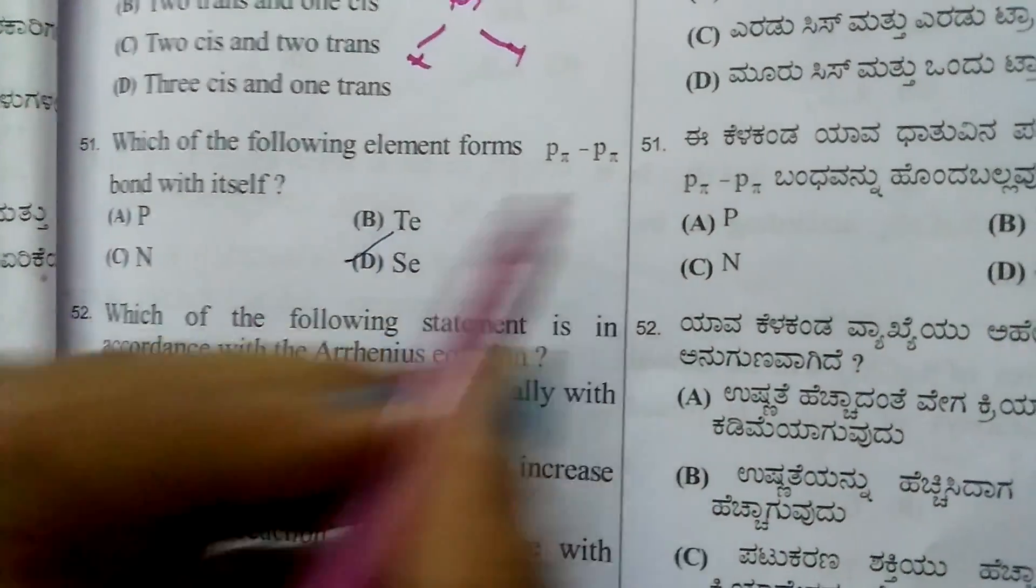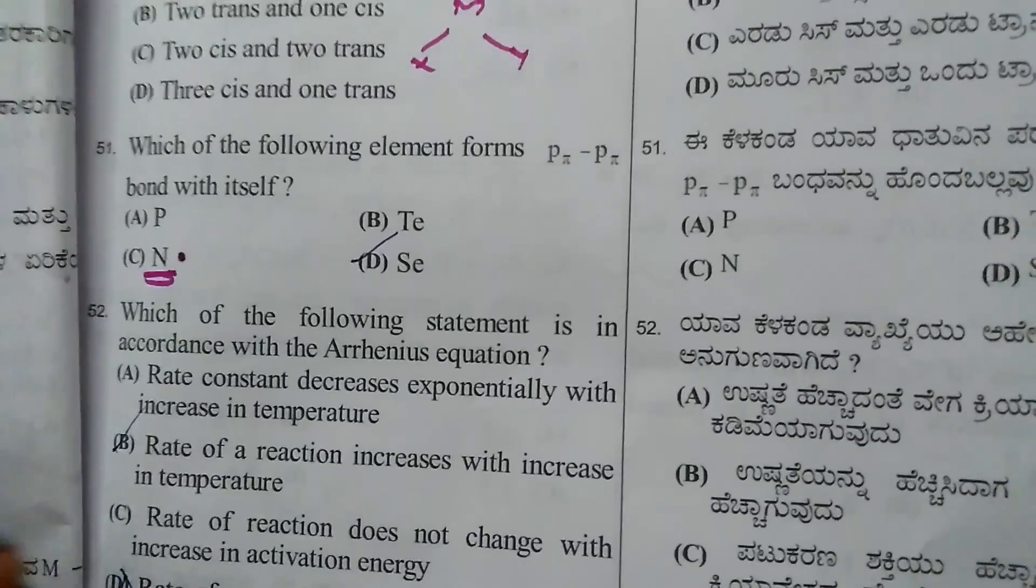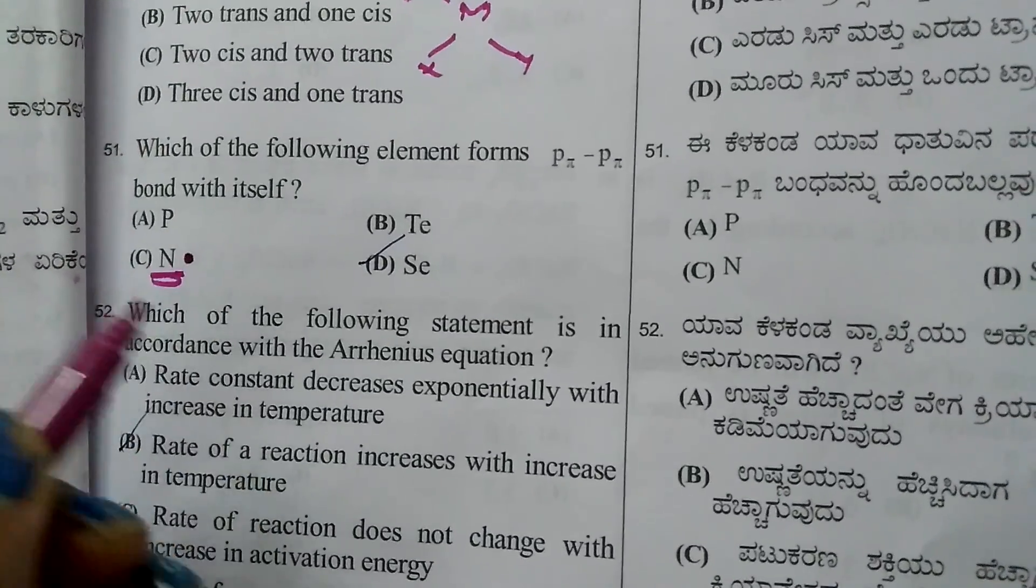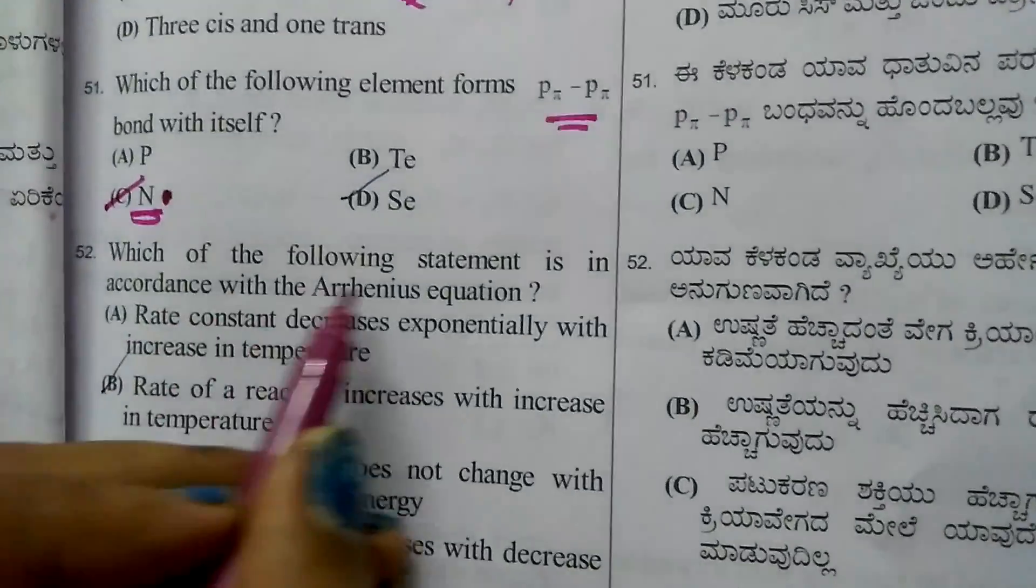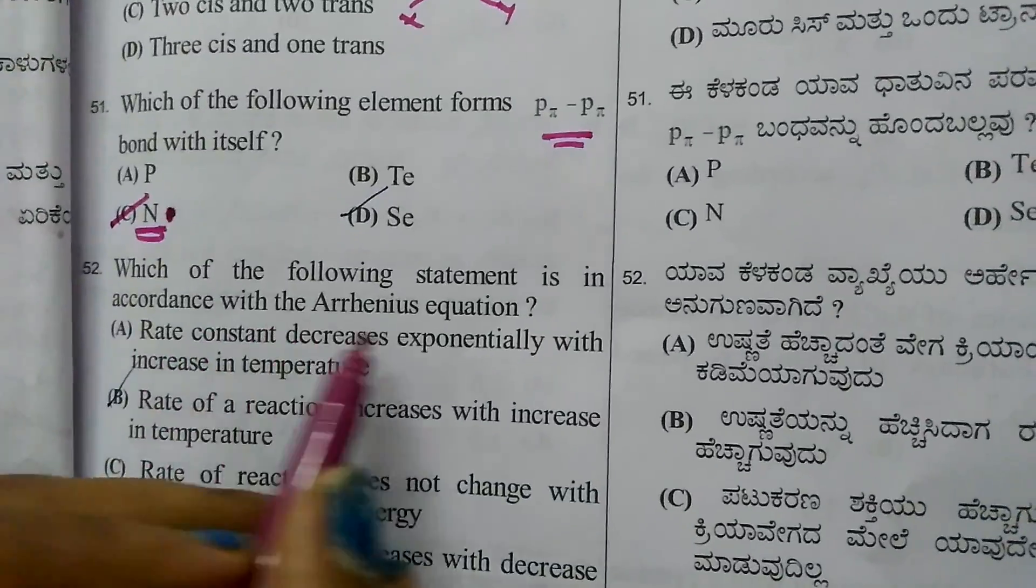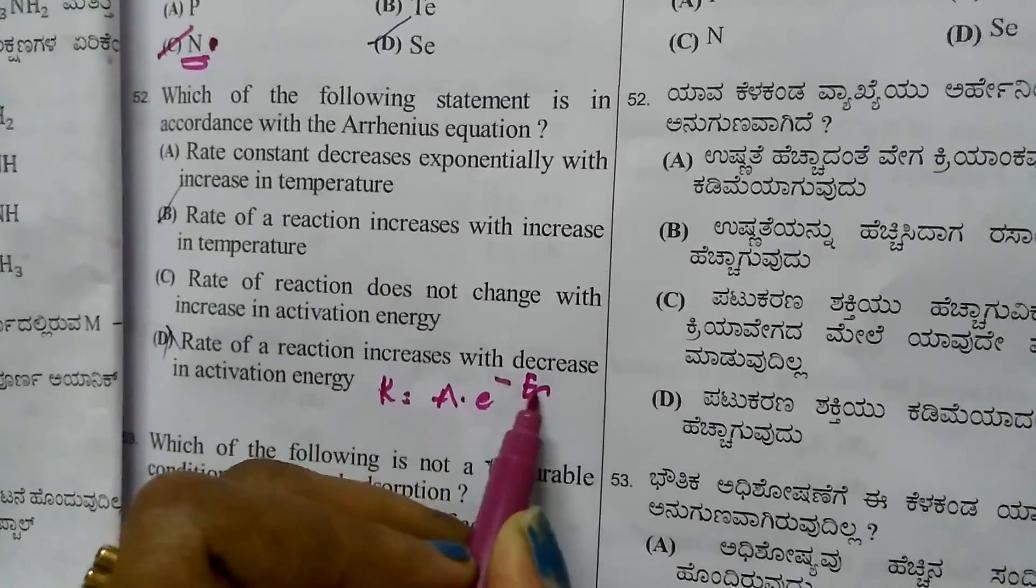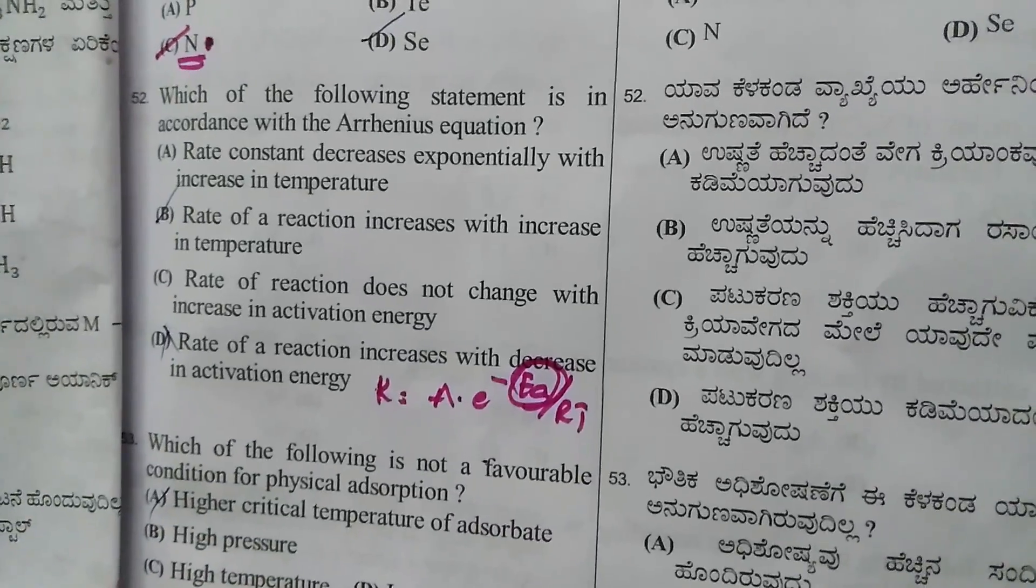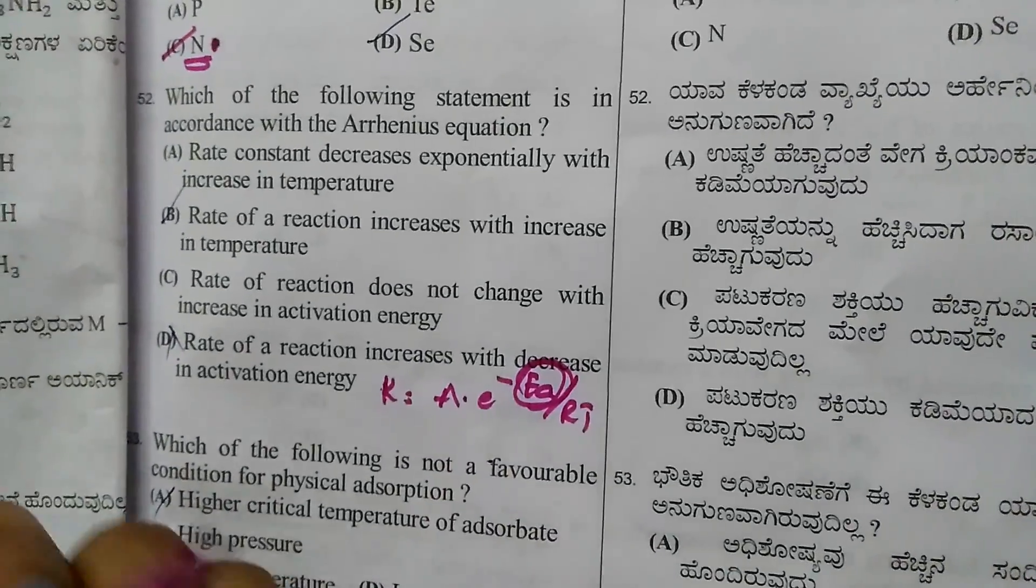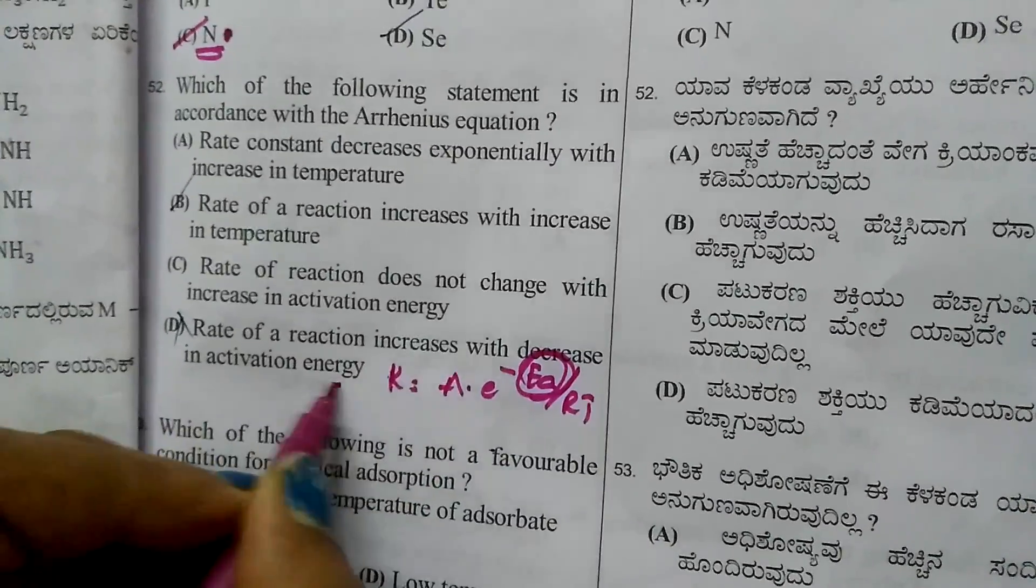Question 50: Which element forms pπ-pπ bond with itself? Nitrogen, because of small size, presence of p electrons, and absence of d orbitals, shows pπ-pπ bonding. Question 51: Statement in accordance with Arrhenius equation. K = Ae^(-Ea/RT). Higher activation energy means lower rate. Decrease in activation energy leads to increase in rate of reaction.